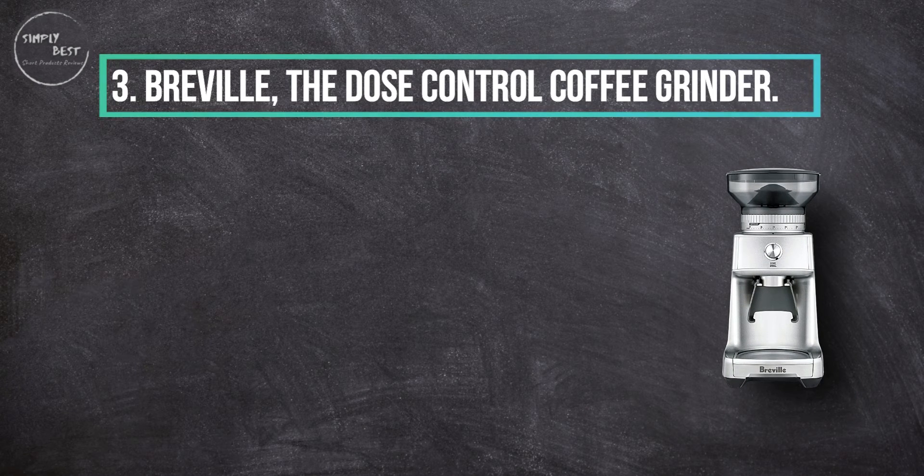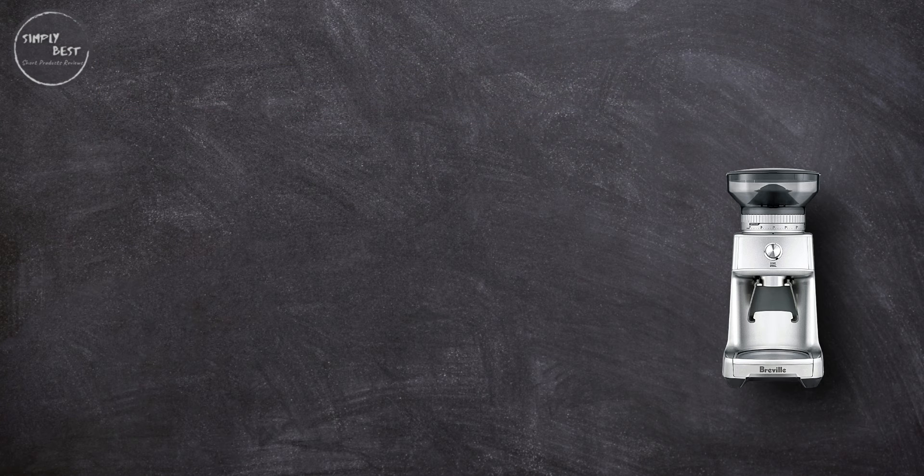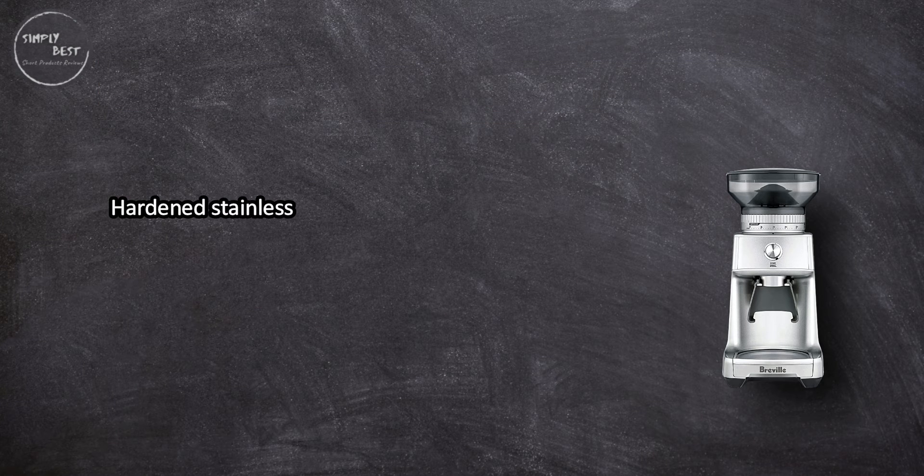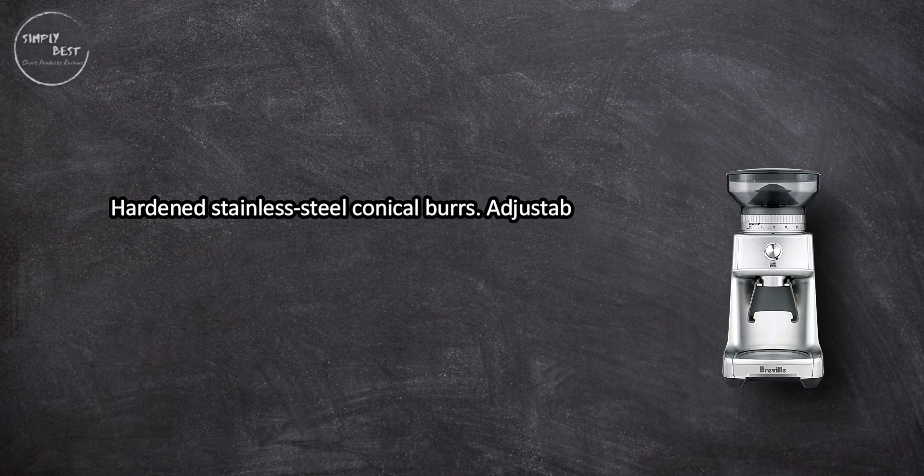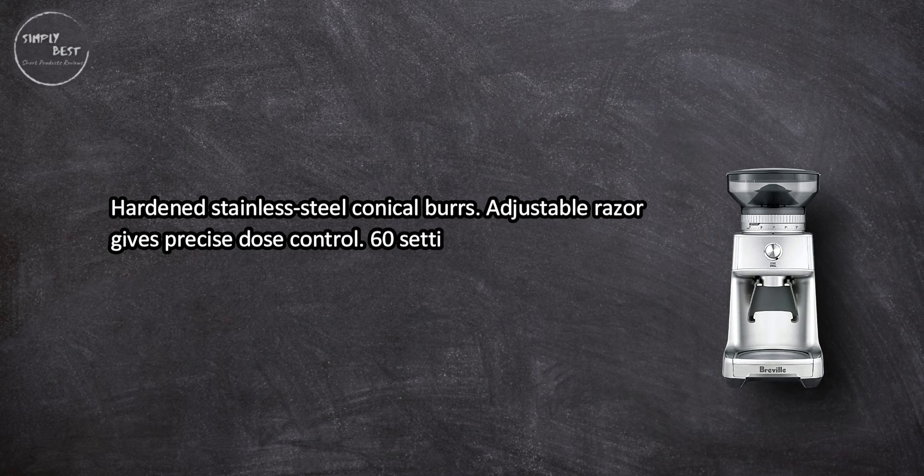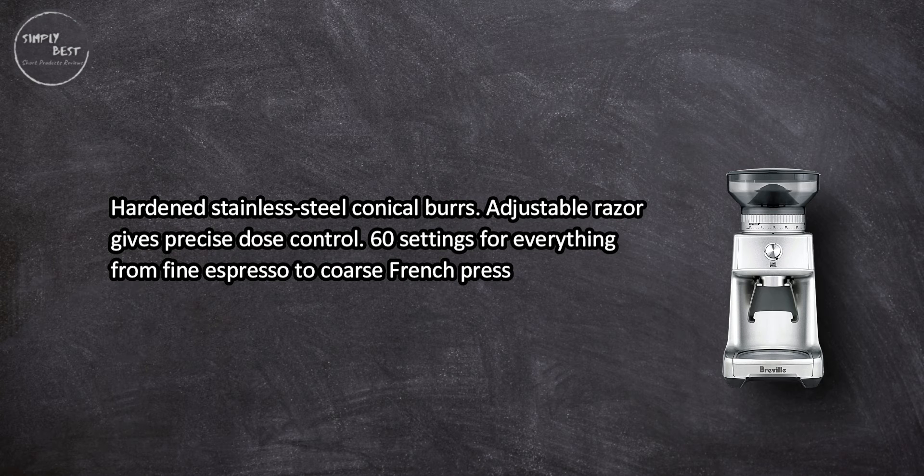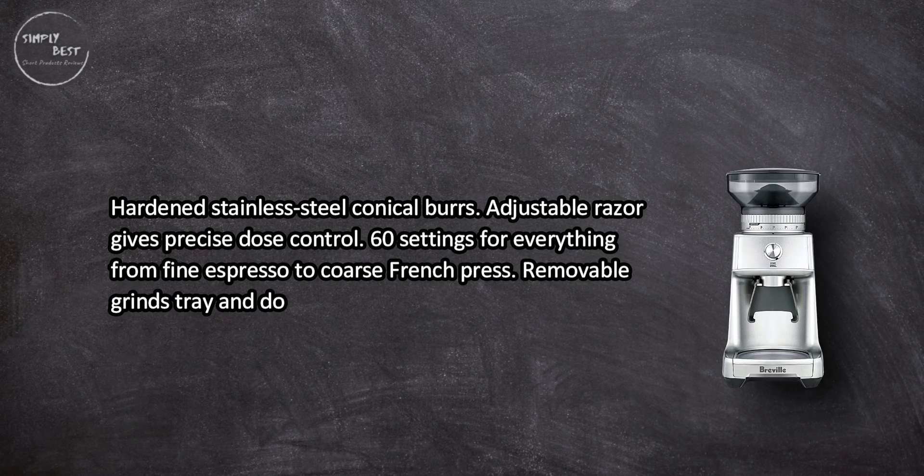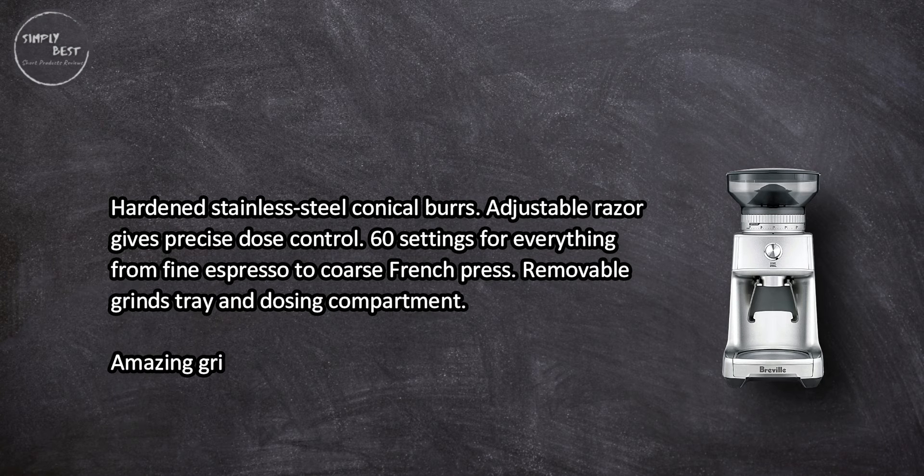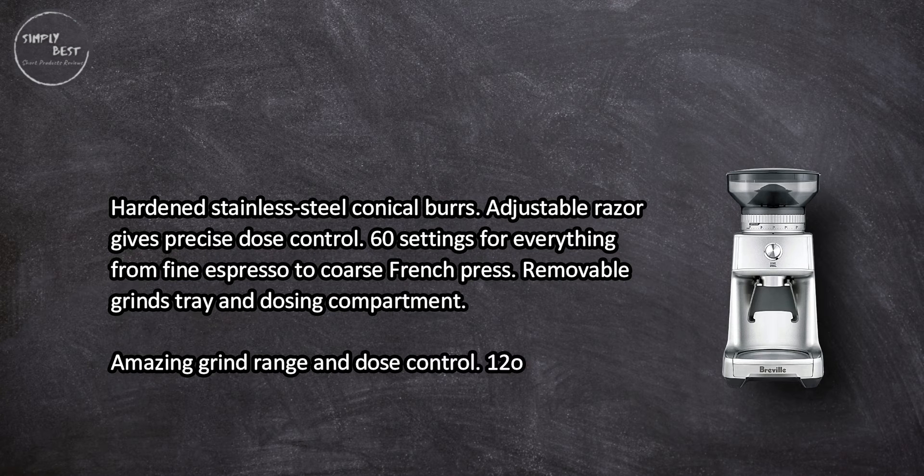Breville the Dose Control Coffee Grinder. Hardened stainless steel conical burrs. Adjustable razor gives precise dose control. 60 settings for everything from fine espresso to coarse French press. Removable grinds tray and dosing compartment. Amazing grind range and dose control.